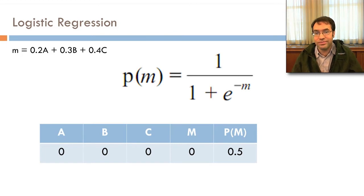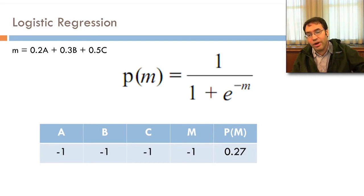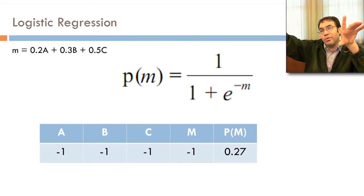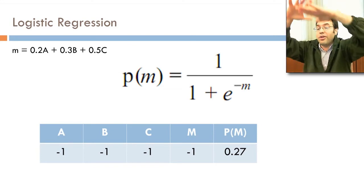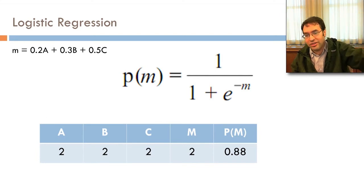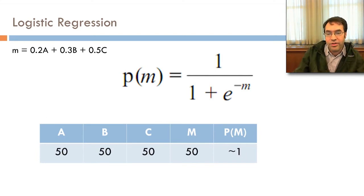Try it in Excel. If they're all 1, then m will be 1 and p(m) will be 0.73. If they're all negative 1, m is negative 1 — notice that when it was 1 the result was 0.73, which is 0.23 above 0.5; now it's 0.23 below 0.5. For m equals 2, it's 0.88; for m equals 3, it's 0.95; and if they're all 50, it's essentially 1.